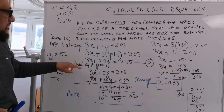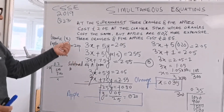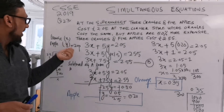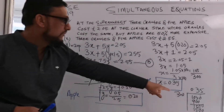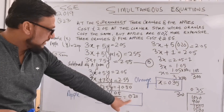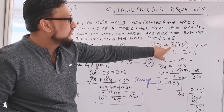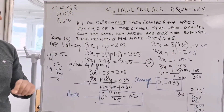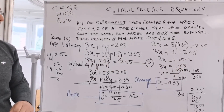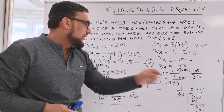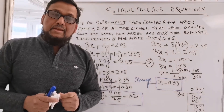Then equation A is subtracted from equation B, and you will get the answer for y, which is the apple price: 20 pence. The orange price comes to 35 pence. We substitute the value of y — 20 pence — into equation A: 5 times 20 pence equals 1 pound, then move it to the other side to get 1 pound and 5 pence, and the x value comes to 0.35. This is the mark scheme for CSSE 2019.